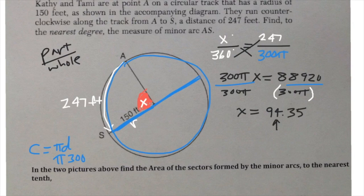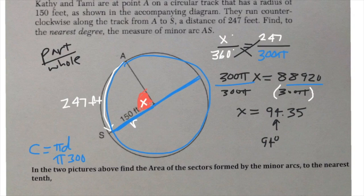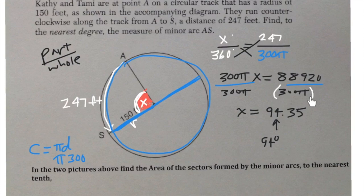If you type it the wrong way — 88920 divided by 300, then multiplied by π — the graphing calculator gives 931 degrees, which is impossible for a central angle. So when dividing by more than one thing, put them in parentheses. Some teachers have students put both numerator and denominator in parentheses as a precaution.